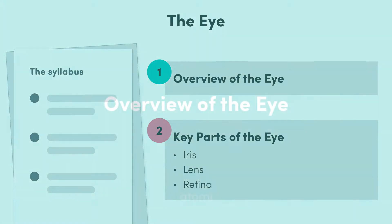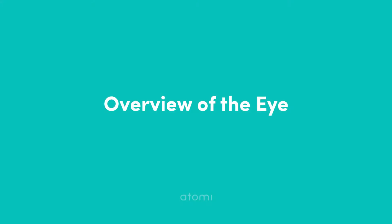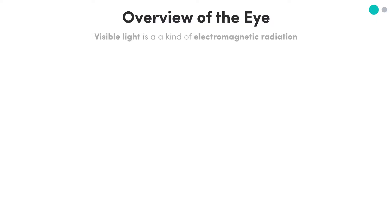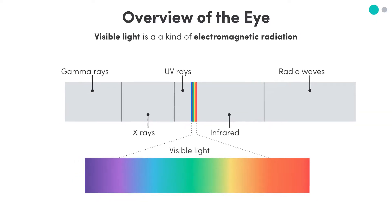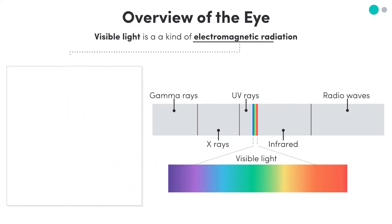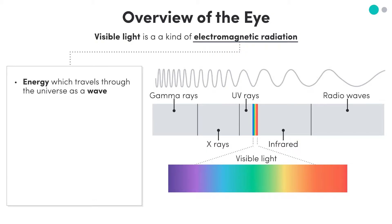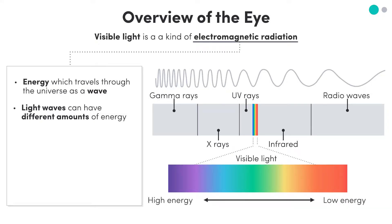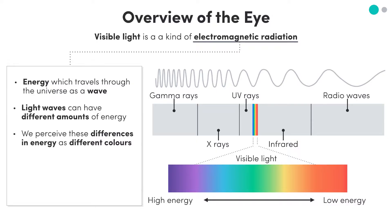First off, I want to make a point about light itself. Visible light is a kind of electromagnetic radiation — that is, it's a kind of energy which travels through the universe as a wave. These light waves can have different amounts of energy, and we perceive these differences in energy as different colors. High energy light appears purple, low energy light appears red, and all of the other colors fall in between.